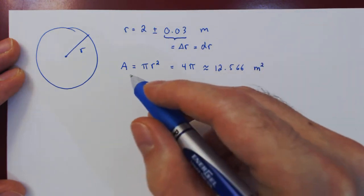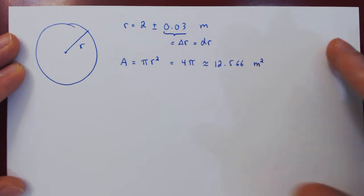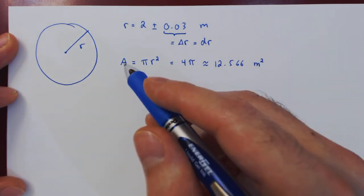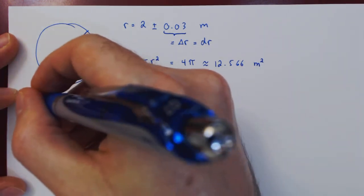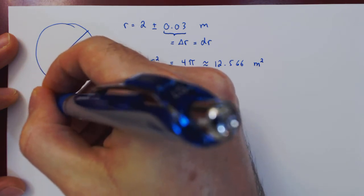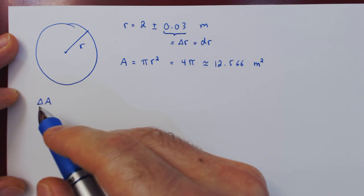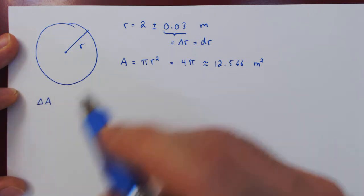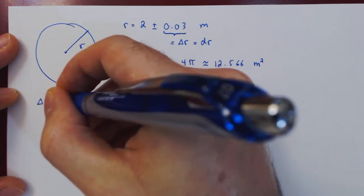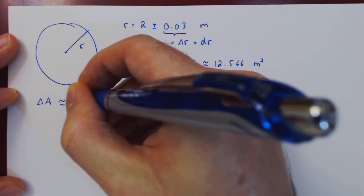How do we find the uncertainty of the area? The uncertainty in the area will be a small change in the area, namely delta A. We can approximate the change in the area by the differential in the area, dA.